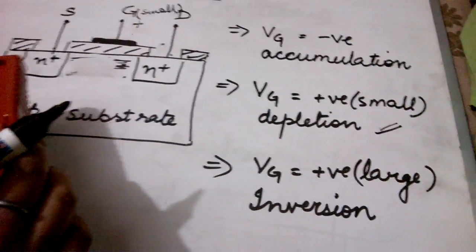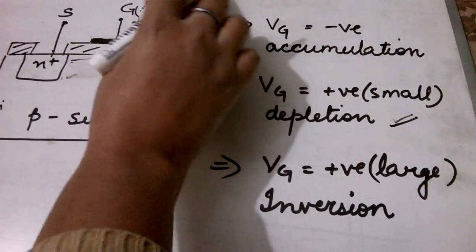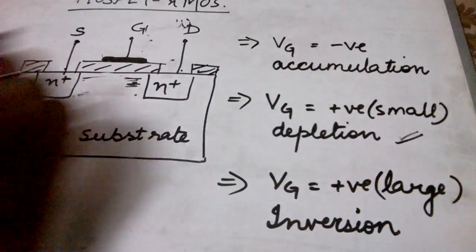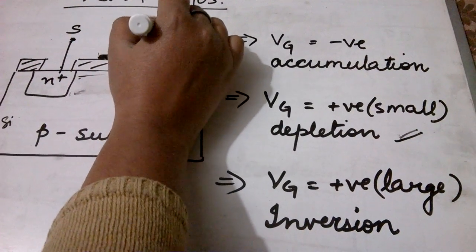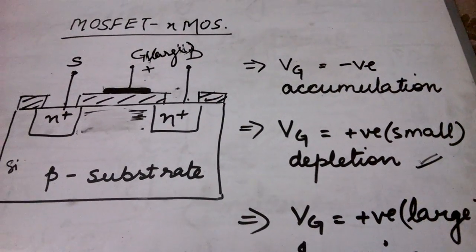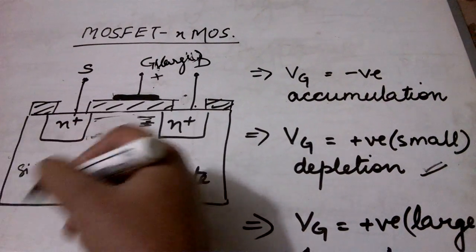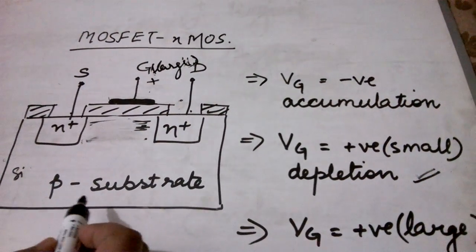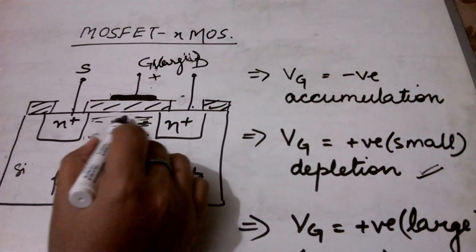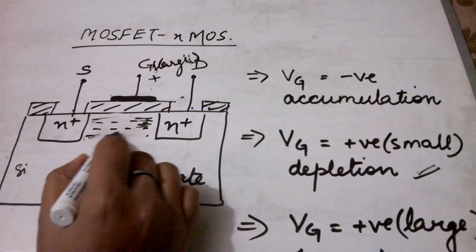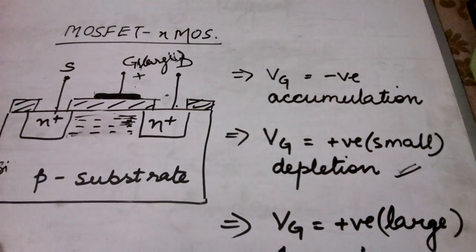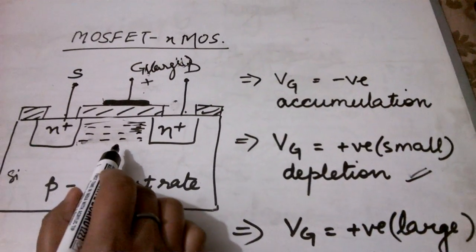Now let's take the third case that is when I apply a very large positive voltage on the gate terminal. When a large positive gate voltage is applied, what happens? More and more electrons are drawn in from the p-type substrate and after depletion, we have extra electrons also to help in the conduction process.